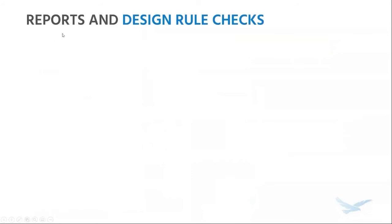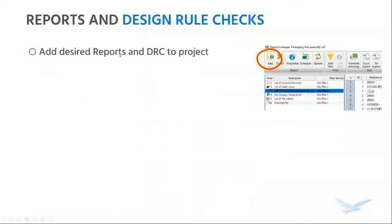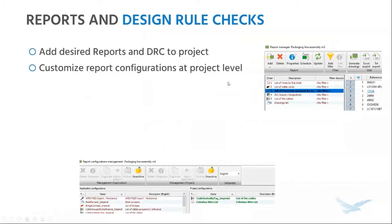I've got a quick section on reports and design rule checks. If you would like all your new projects to have specific design rule checks and reports, go ahead and add them in — things like a bill of materials, wire from-to list, a drawing list, list of cables. Things that all projects should have — why not just add it to the template. You also have the option of customizing these reports at a project level, so they remain unaffected at the application level if they're being used in other projects. Something to keep in mind: these reports are linked to the unit system. If you are in a metric project, you have access to metric reports; if you're in an imperial project, you access imperial reports. Pretty much all the default reports in SolidWorks Electrical come in both flavors.